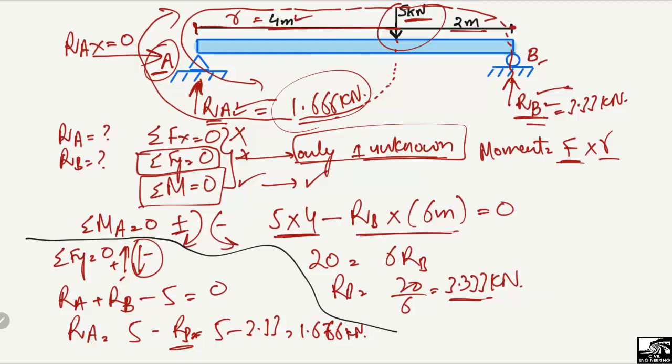This is the way to find support reactions for a simply supported beam. By using these three equilibrium equations with simple logic, you can easily find any support reactions. Hope you guys understand — don't forget to subscribe to our channel for daily civil engineering videos.